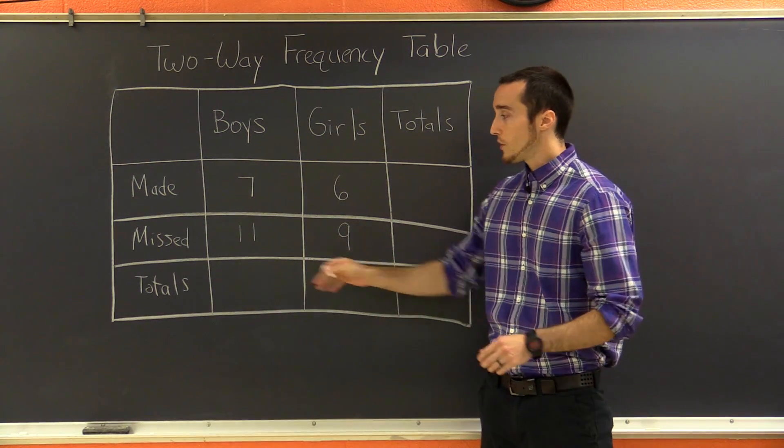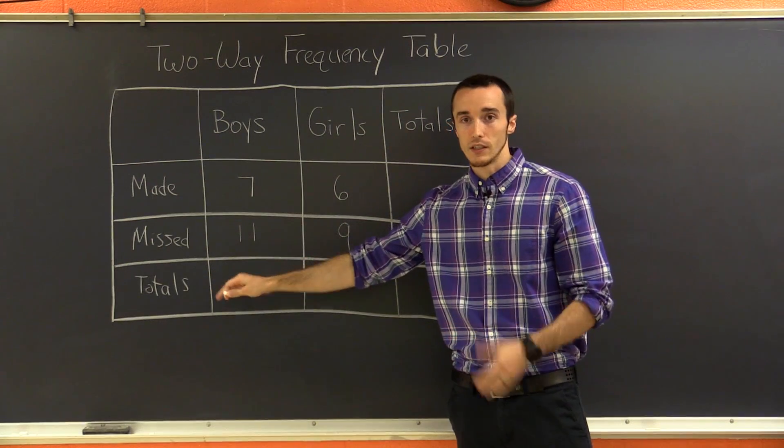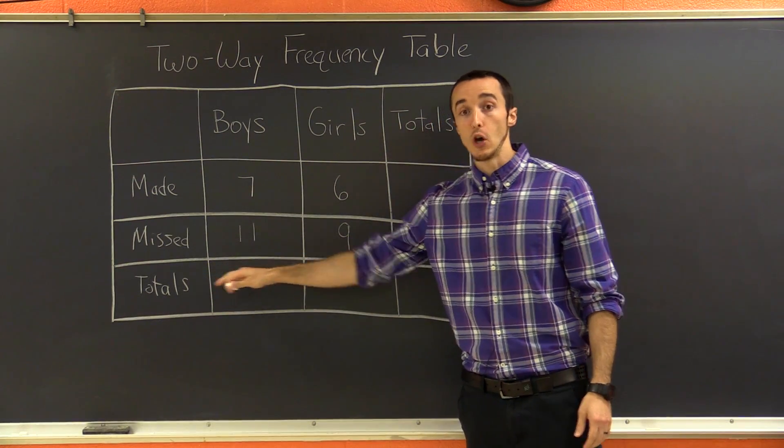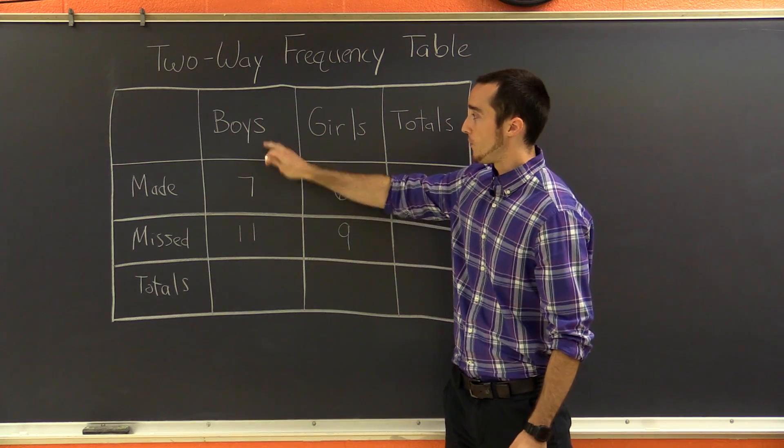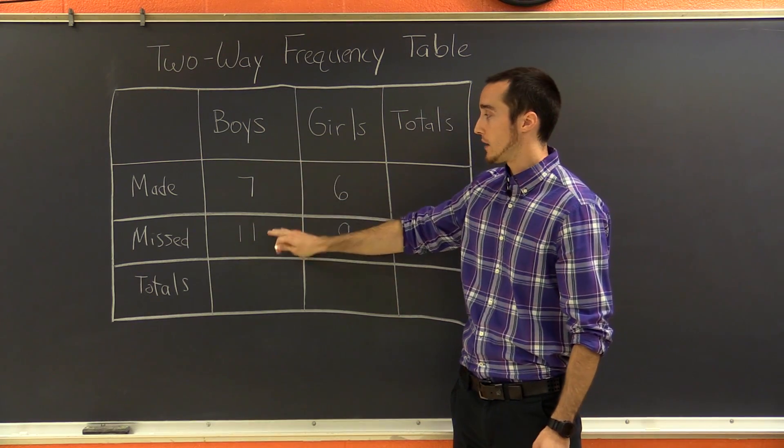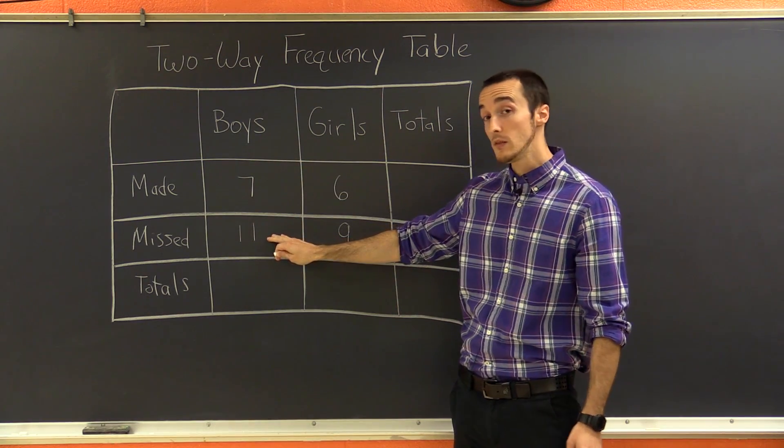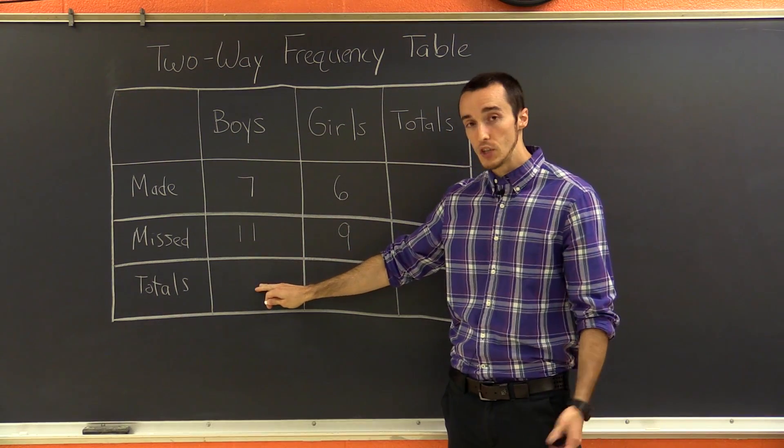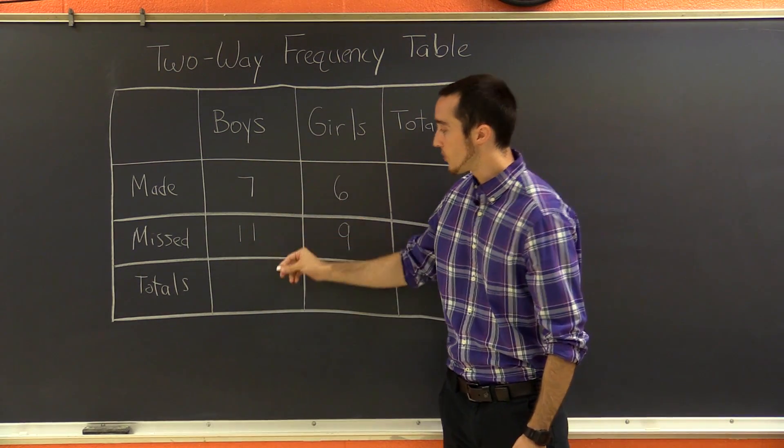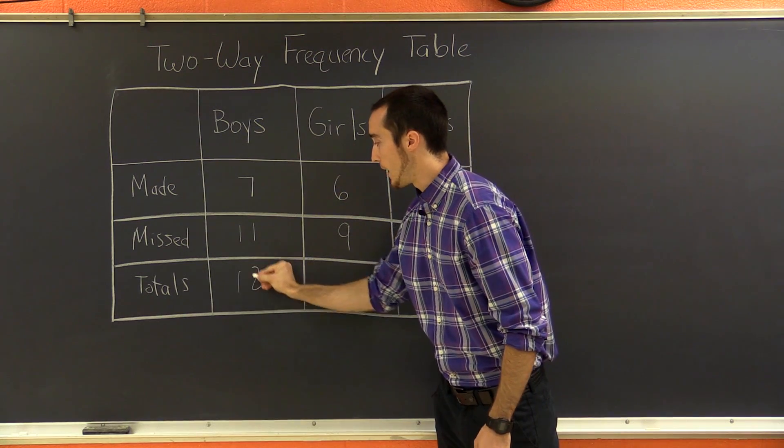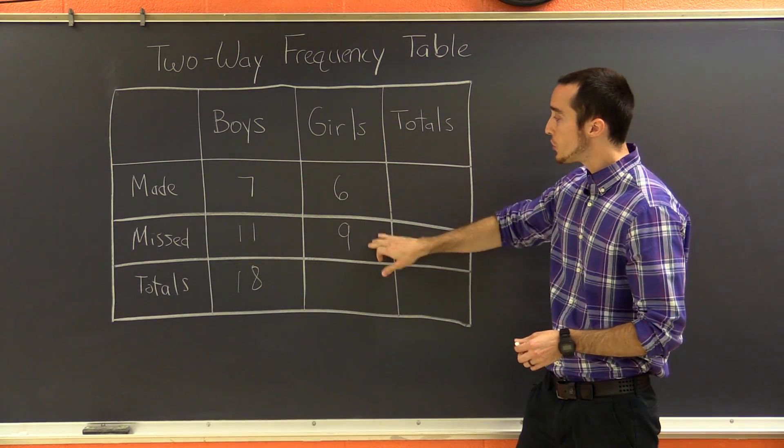Now, what you'll notice is that in this particular table, we also have the totals row and column. So we can use that to, for instance, if we see that there are seven boys who made a basket and 11 boys who missed a basket, then we can see that the total number of boys in the class on that day would be 7 plus 11 is 18.